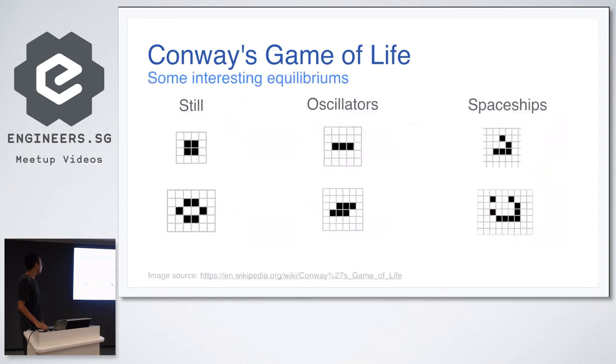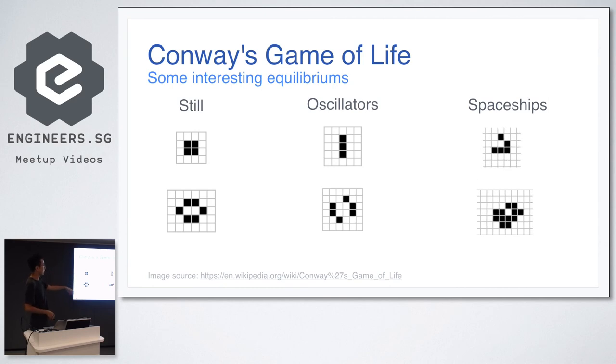There are some interesting equilibriums where you settle some still lives. So it just remains there. Lives have stayed there forever. Dead cells stay dead forever. And oscillators, similar to the one we just saw, just alternating between two patterns. And space shapes moving across the board.